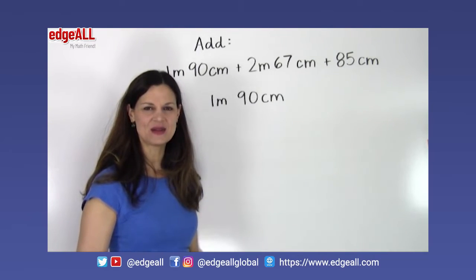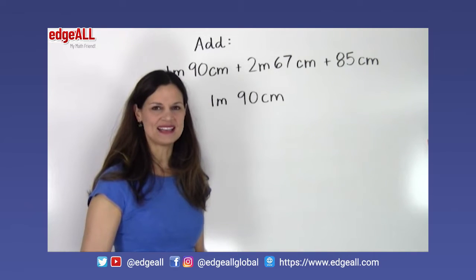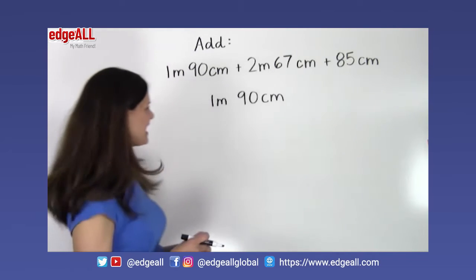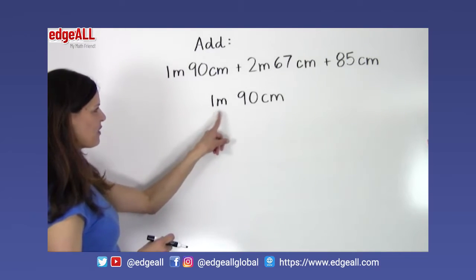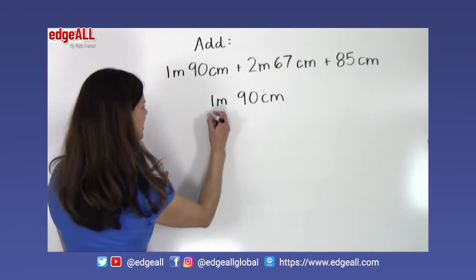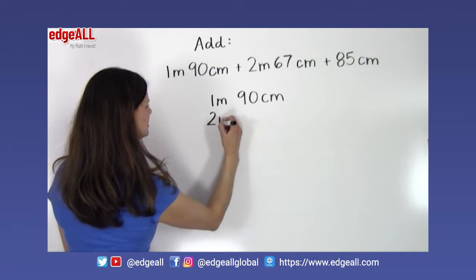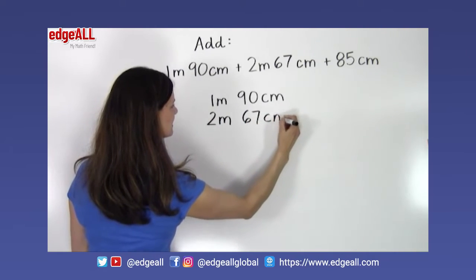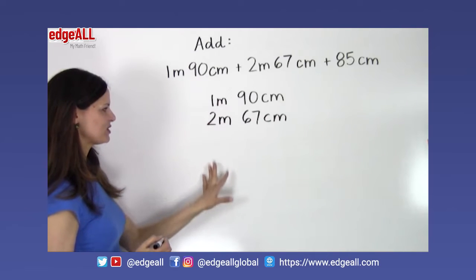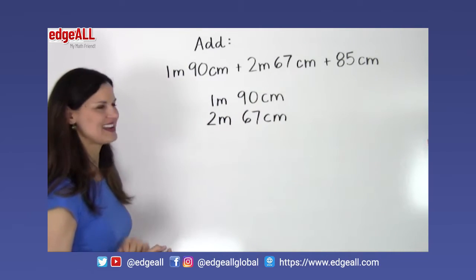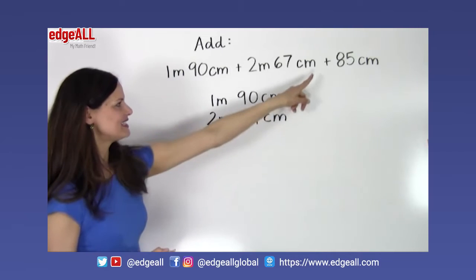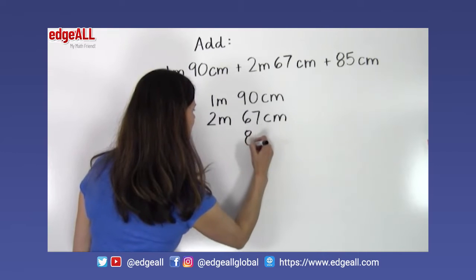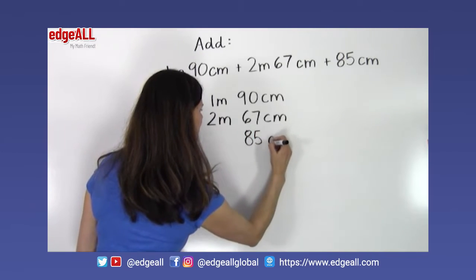So let's begin with step 1. Step 1, we want to align our measurements vertically. So I'm starting here with my 1 meter 90 centimeters and I'm going to add 2 meters 67 centimeters lined up vertically. Meters are going to go here in this column, centimeters here in this column. And I still have a third measurement to add which is my 85 centimeters.